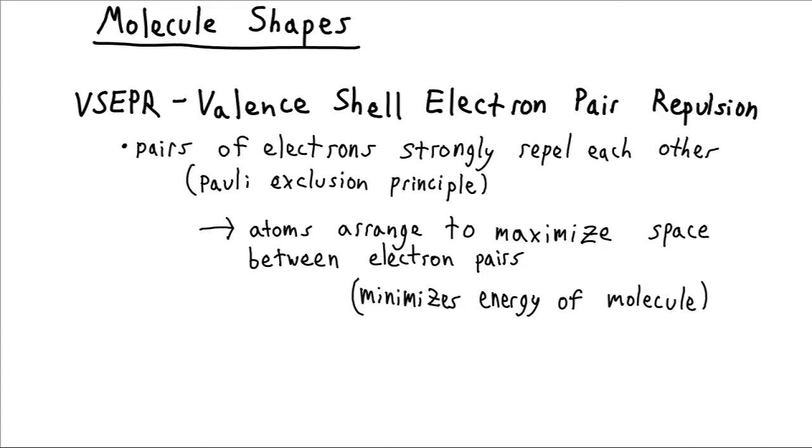And our tool to do this is called VSEPR, the valence shell electron pair repulsion. It seems like quite a mouthful, but it's actually almost nothing new.